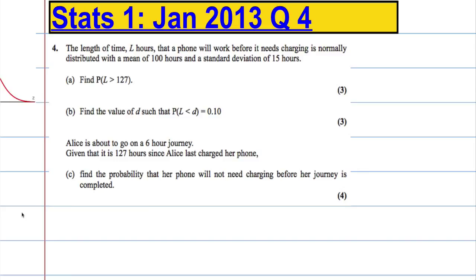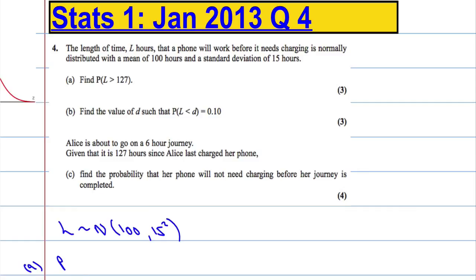Part A: find the probability that L is greater than 127. We're going to let L be distributed normally with a mean of 100 and a standard deviation of 15. So we want the probability that L is greater than 127.